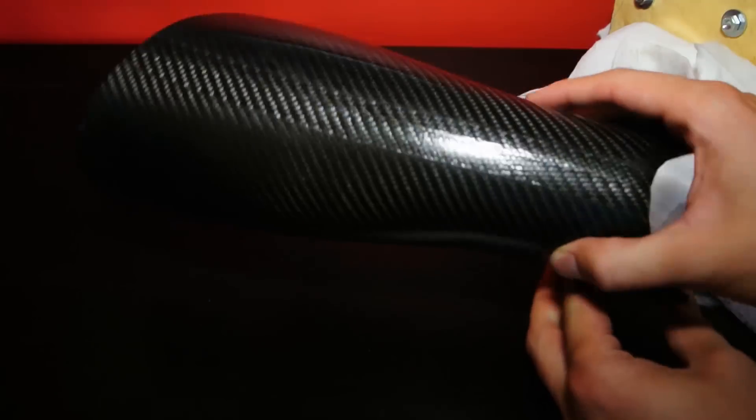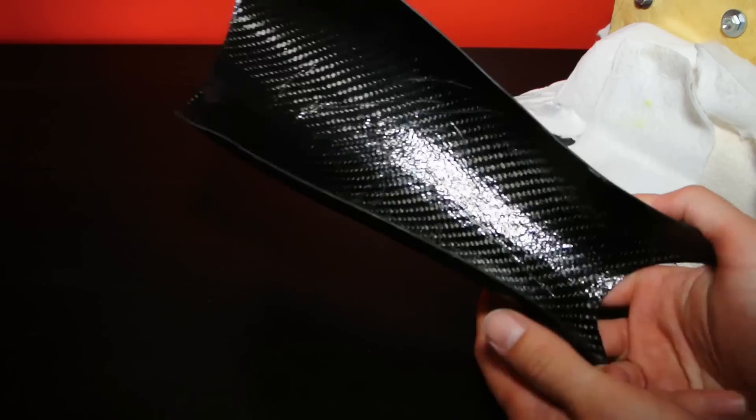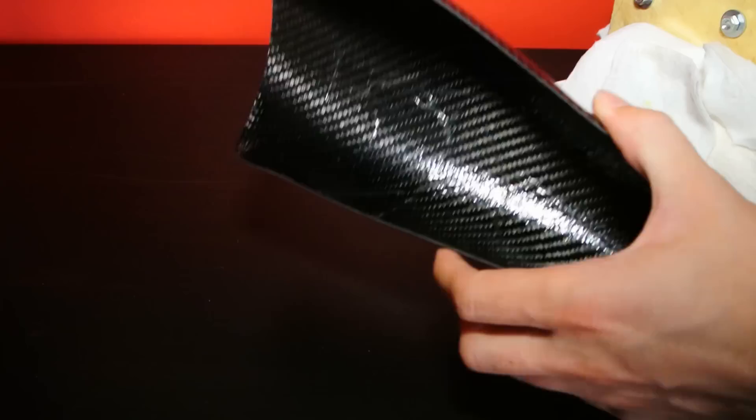This is how the mold looks like. Once you have the mold, you just have to post-cure it in an oven, and then you can start with pre-preg parts. These are parts coming out of this mold.